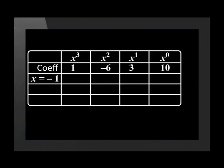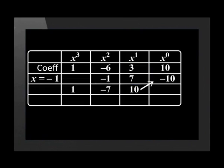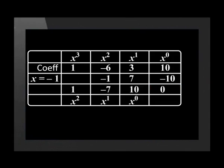Now let's set up our table for the synthetic division method. The variables are in the top row in descending order. The coefficients are in the second row, and x equals negative 1 is in the third row. We bring down the coefficient of x cubed. Negative 1 multiplied by 1 gives us negative 1. The sum of negative 6 and negative 1 is negative 7. Negative 1 multiplied by negative 7 gives us positive 7. The sum of 3 and 7 is 10. Negative 1 multiplied by 10 is equal to negative 10. And the sum of 10 and negative 10 is 0.